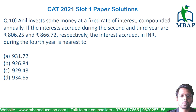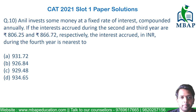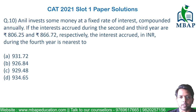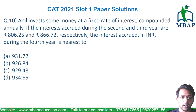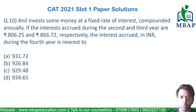Let's take the next easy question. Anil invests some money at a fixed rate of interest compounded annually. If the interest occurred during the second year and the third year is 806.25 and 866.72 respectively, then the interest in the fourth year will be nearest equal to what? That is the question.